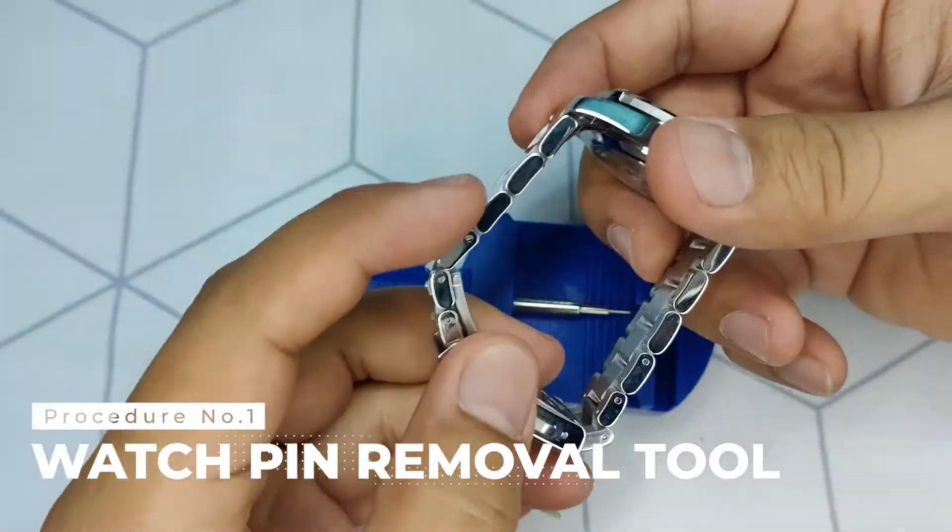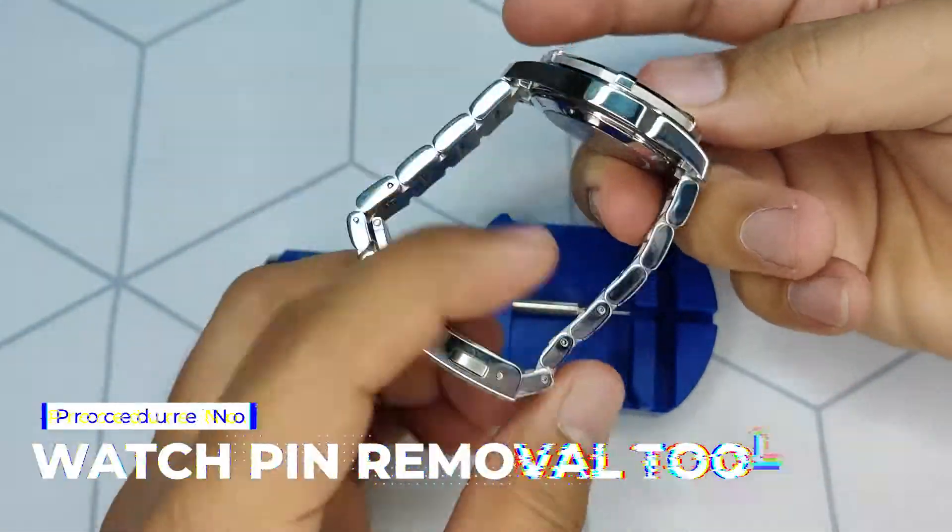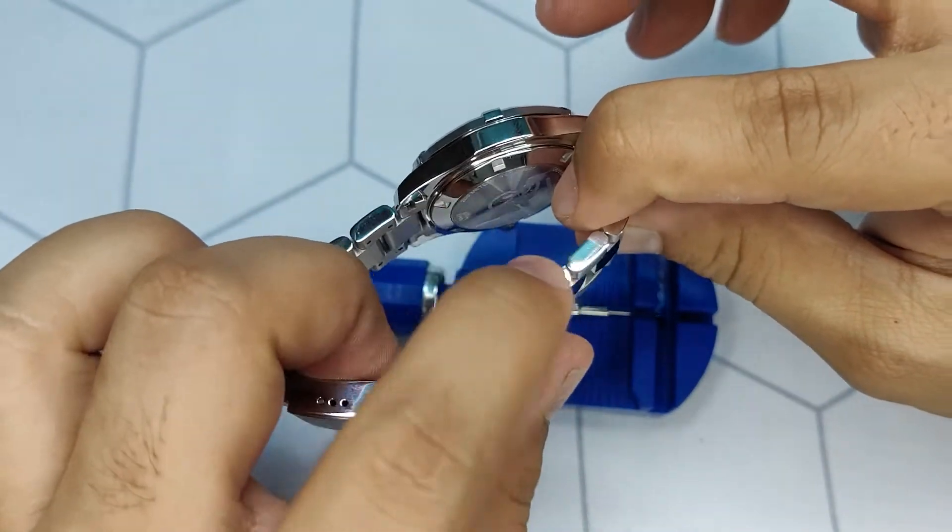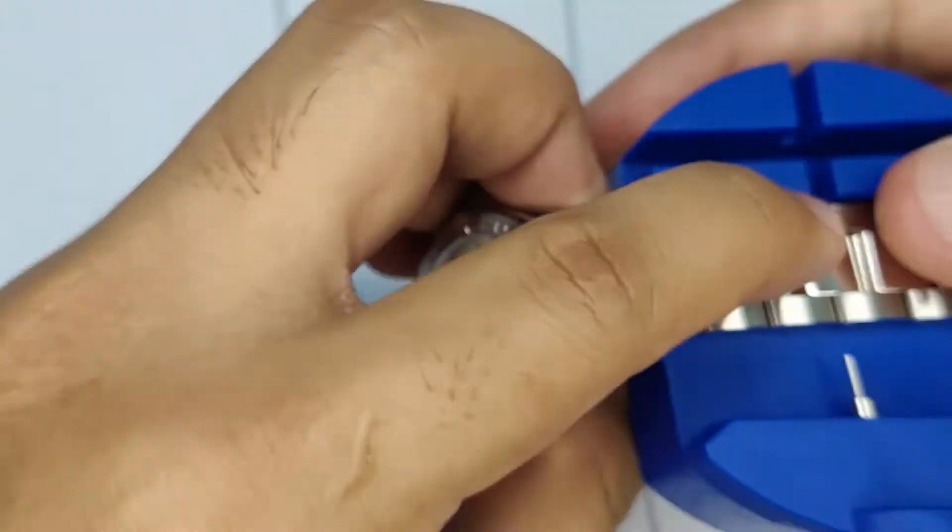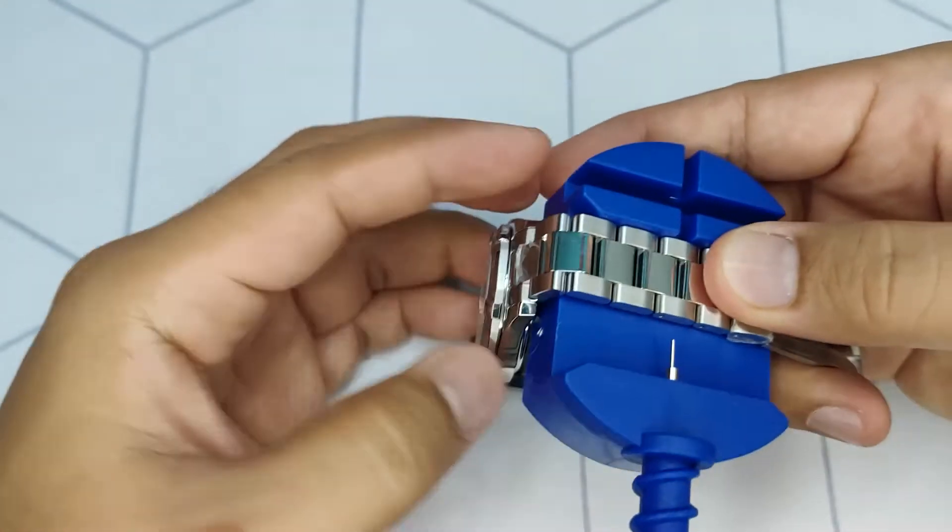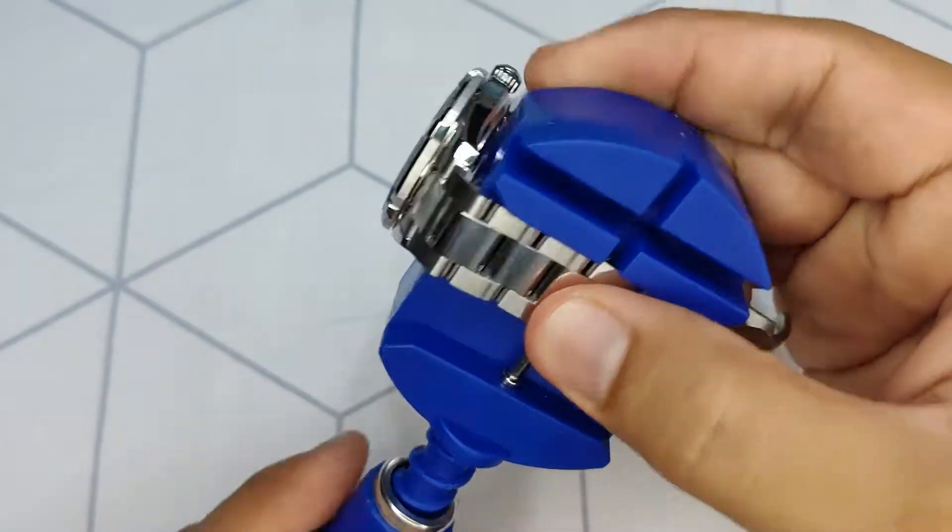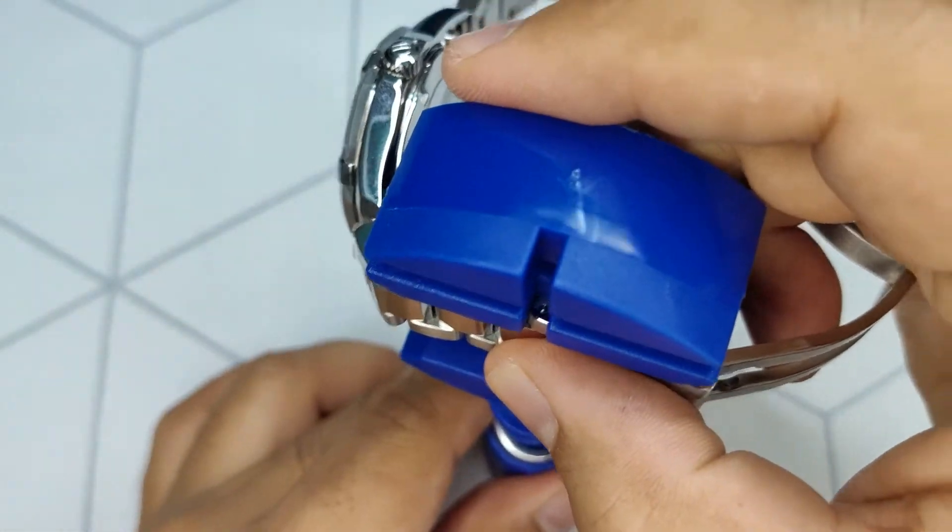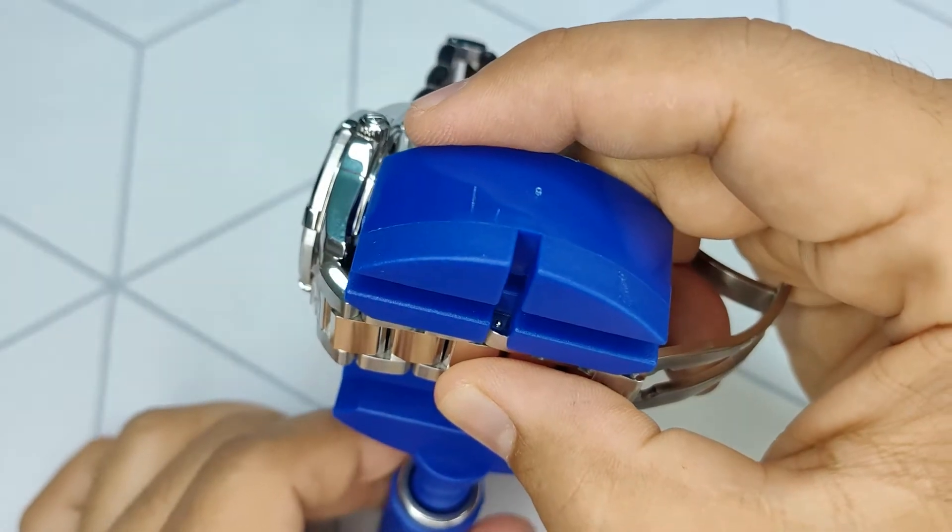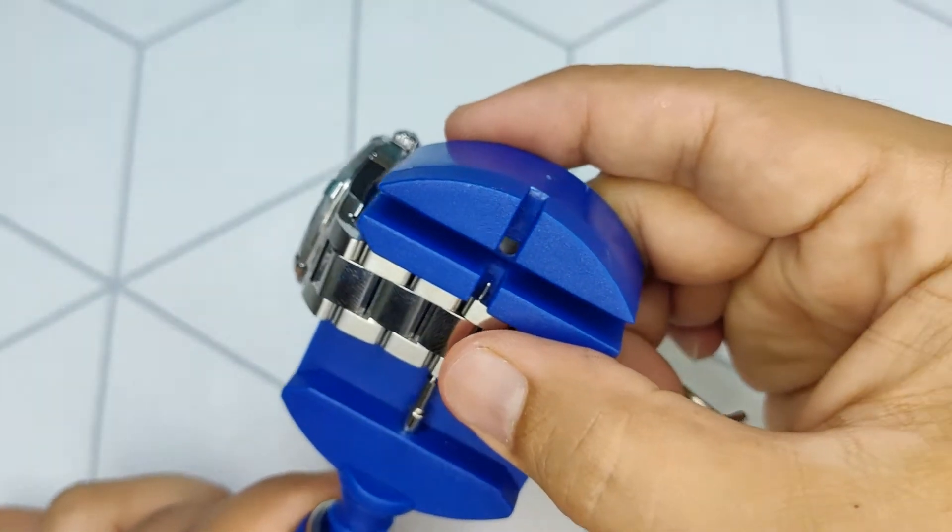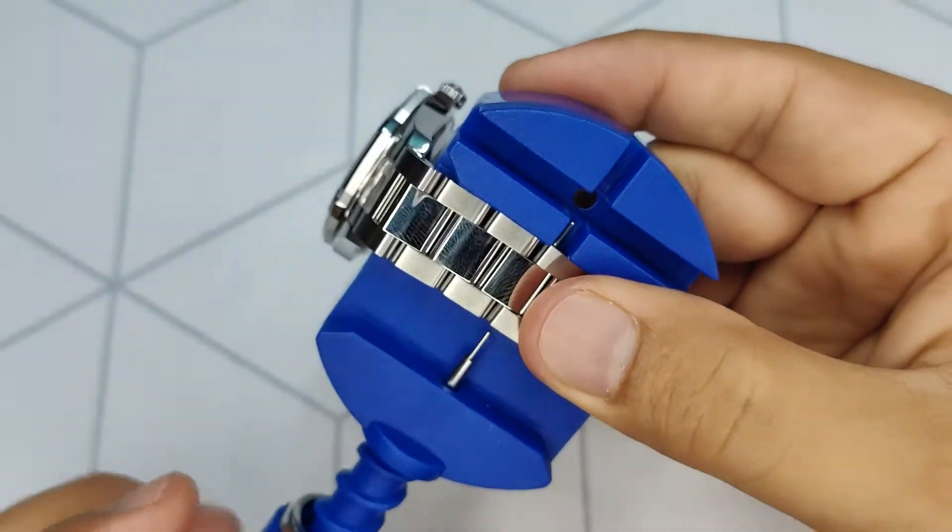Now let's start with the adjustments using a watch pin removal tool. Since I will be removing links, I will be working on the longer side. Lay down flat your watch on the tool and center the needle to the link pin. Once centered, turn the needle knob carefully until the pin comes out on the other side of the link. This procedure with the tool is the easiest and most convenient way to remove watch links.